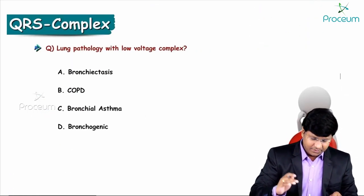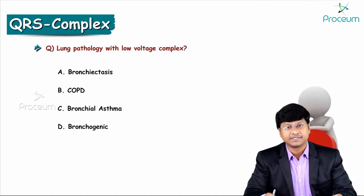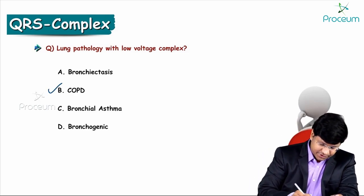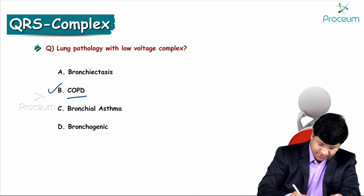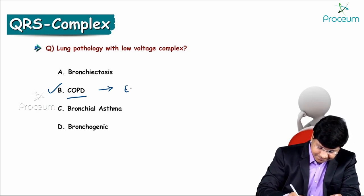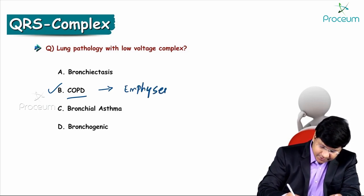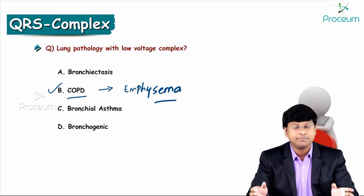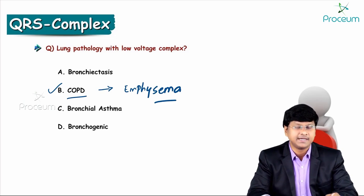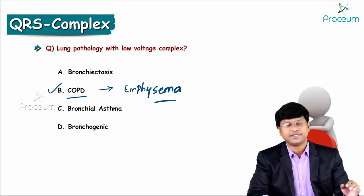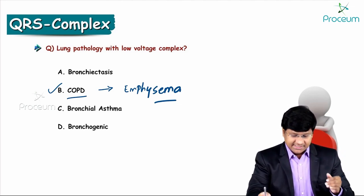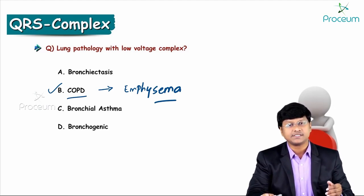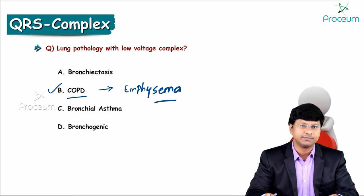Regarding lung pathology with low voltage complexes — the answer is COPD. In chronic obstructive pulmonary disease, the subtype emphysema causes abnormally dilated, irreversibly enlarged lungs that overlap the heart. This prevents the cardiac electrical activity from being transmitted adequately to the chest surface, resulting in low voltage complexes.